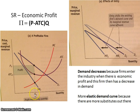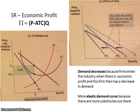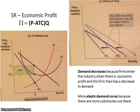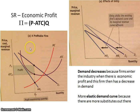MR equals MC gives you the profit maximizing output — that's the quantity they'll produce at. You take it up to the demand curve to get the price. To figure out economic profit, you take price minus ATC times quantity, and that gives you the economic profit shown here. This is just like the perfectly competitive firm in the short run.